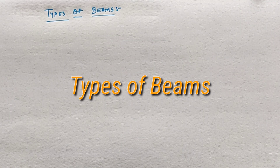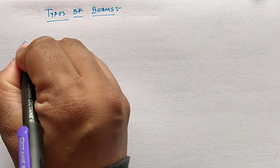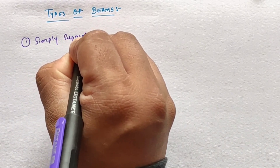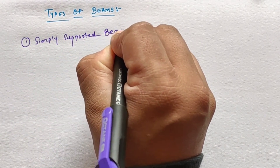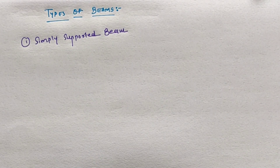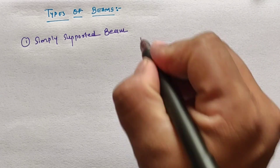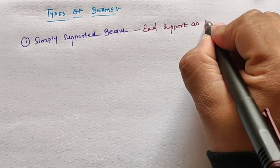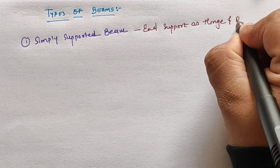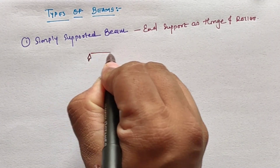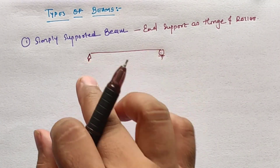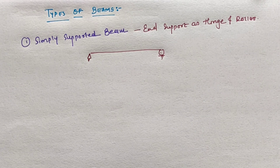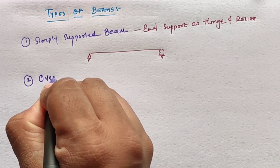Moving on to types of beams according to support conditions. The first beam is the simply supported beam, which is defined as a beam having end supports as hinge and roller.